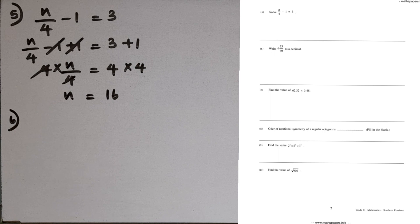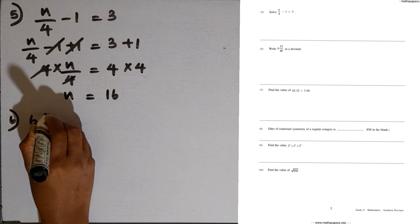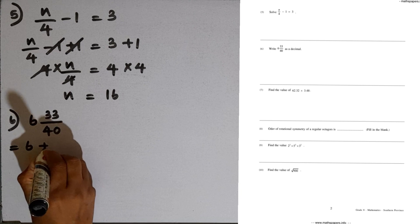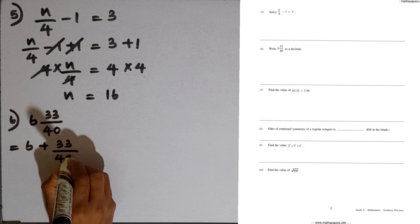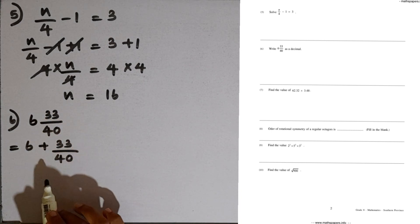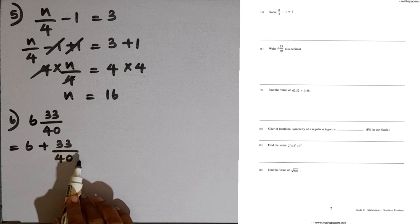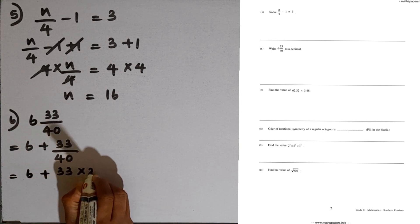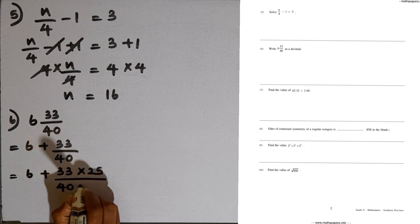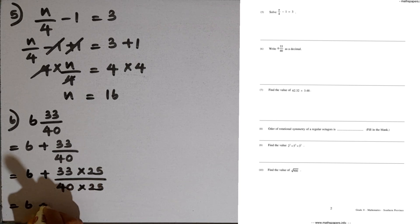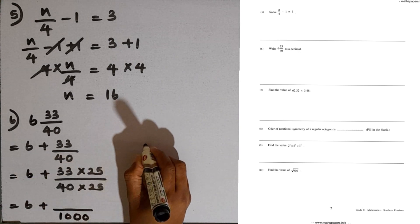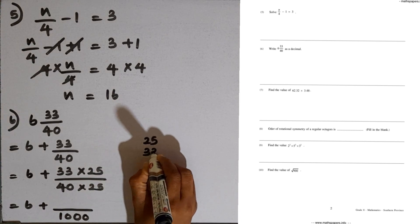Question number 6: write 6 and 36 over 40 as a decimal number. I am going to separate the whole number part and the fractional part. Then I will convert this fraction into one with a denominator that is a power of 10. I multiply 40 by 25 to convert it to 1000. So we have 6 plus 36 multiplied by 25 over 40 multiplied by 25.